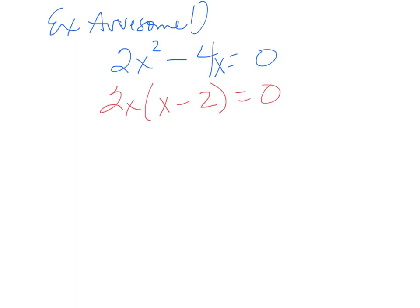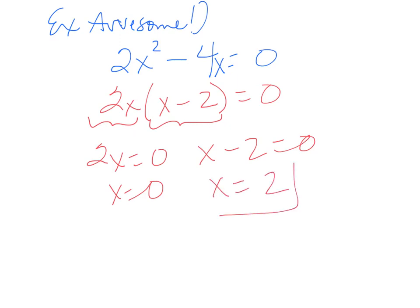Now, with our zero factor property, you set every term that is factored equal to zero. So, 2x equals zero, and x minus 2 equals zero. So, in the first one, you divide both sides by 2, x equals zero, because zero divided by anything is zero. And when you add 2 to both sides, you get positive 2. Check it! How many answers do we have? 2! What's my highest exponent? 2! We got this thing!